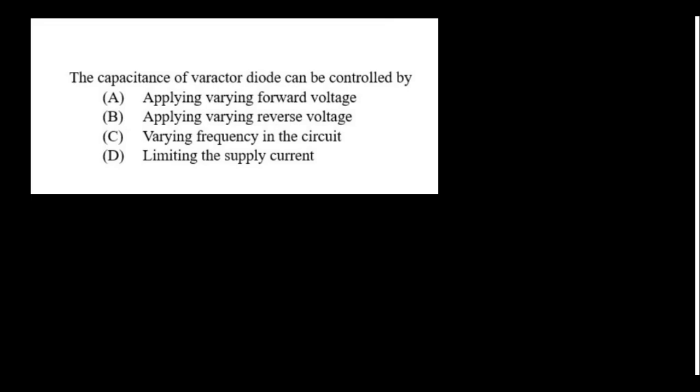The capacitance of a varactor diode can be controlled by applying varying reverse bias voltage. With respect to the reverse bias, the frequency varies. This is more commonly used for automatic tuning.